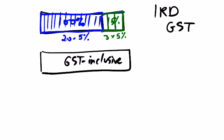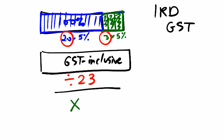We are going to divide by 23 because we have 23 equal 5% parts, and then we are going to multiply this answer by 3 because we have 3 5%, so 3 of those parts counting as GST.